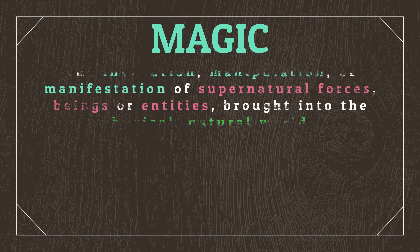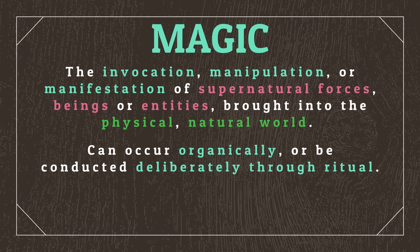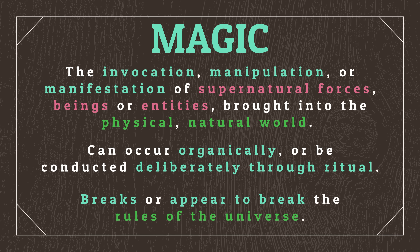Magic, broadly speaking, refers to the invocation, manipulation or manifestation of supernatural forces, beings or entities brought into the physical, natural world. Magic can either occur organically or be conducted deliberately through ritual, but in either case, for something to be considered magic, it must break, or appear to break, the otherwise established rules of our universe. By very definition of magic being law-breaking, there are no rules for which types of magic you'd like to include in your world. Magic defies our real-world scientific reasoning, so the question is not whether you can deviate from reality, but rather when you should deviate from reality.